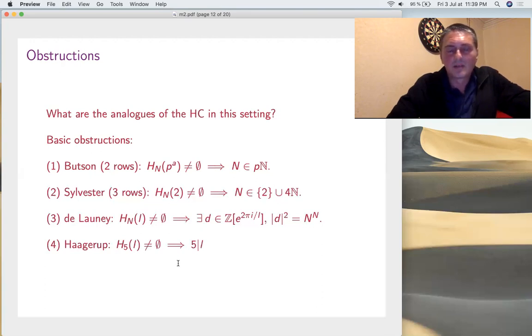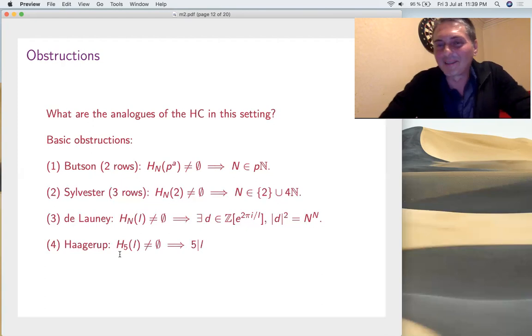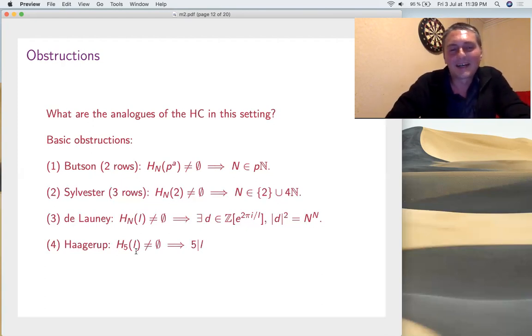Also, something scary, we have this Hadjiarov obstruction. You see, Hadjiarov proved that the Fourier matrix is the only one at 5. So, in particular, it's the only Butson. So, you see H_N of L is different from zero implies 5 divides L because must have roots of unity of order 5. You see, all this is totally random, all these obstructions, how to unify them. And one of the important ones, somehow, is the Butson one. Let me show you.